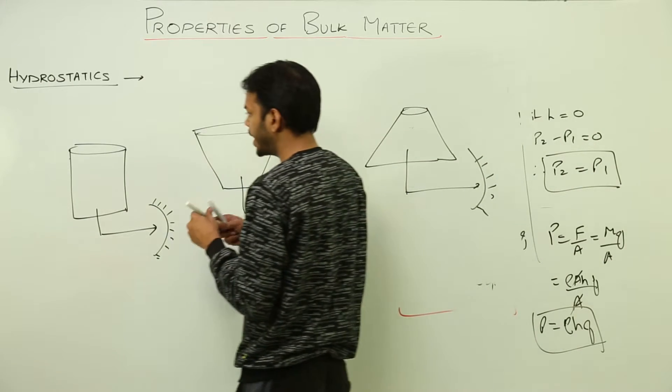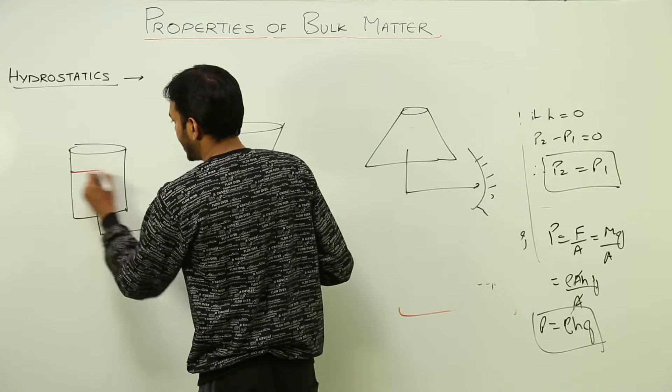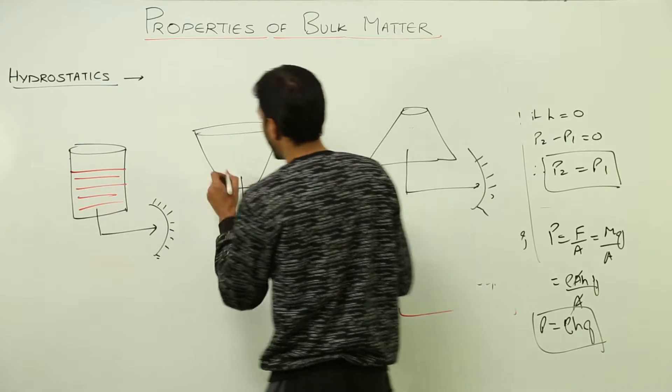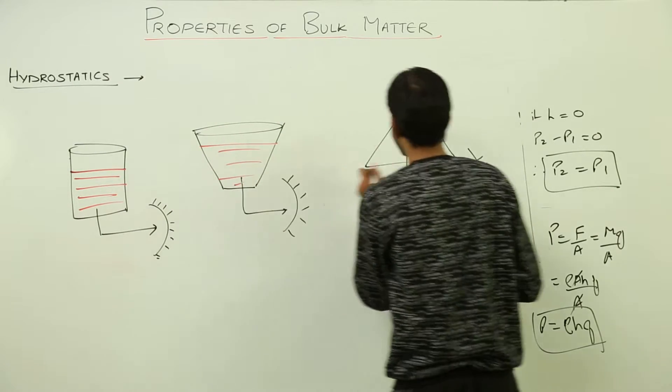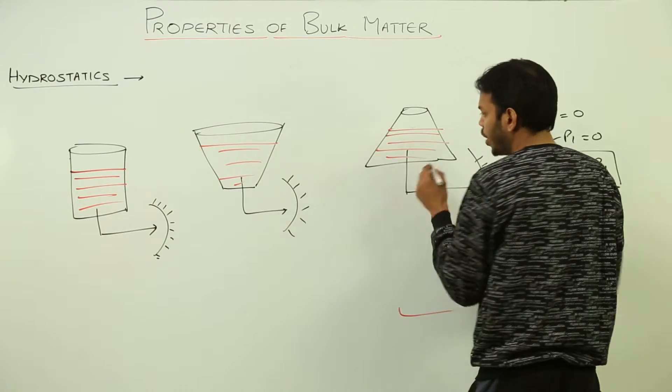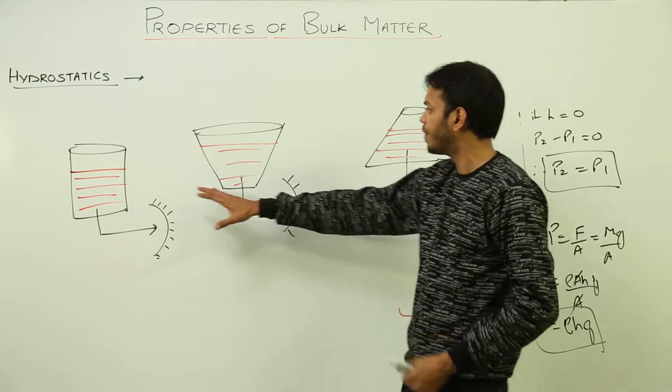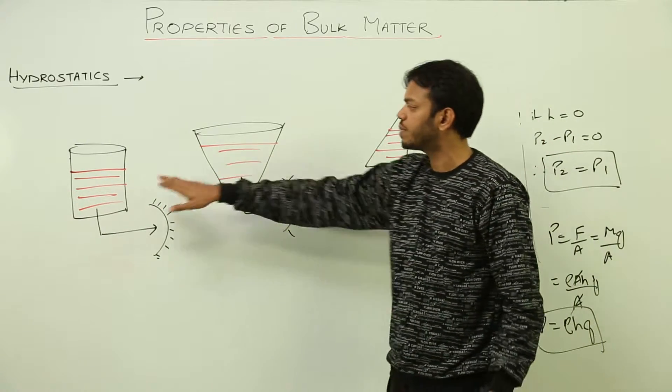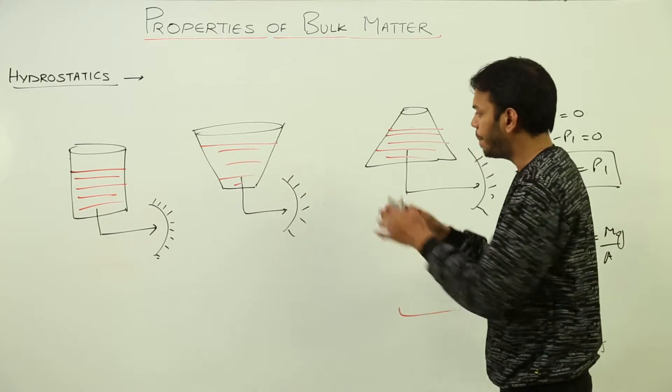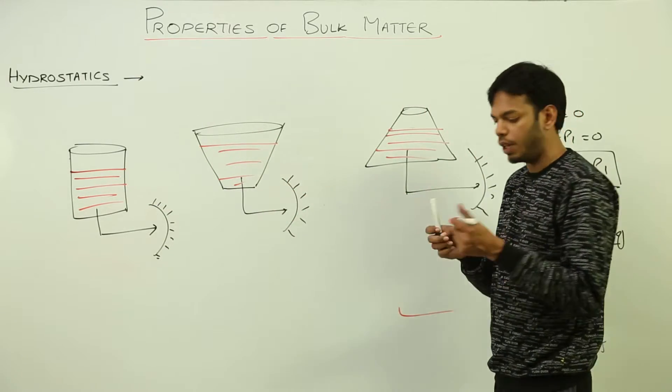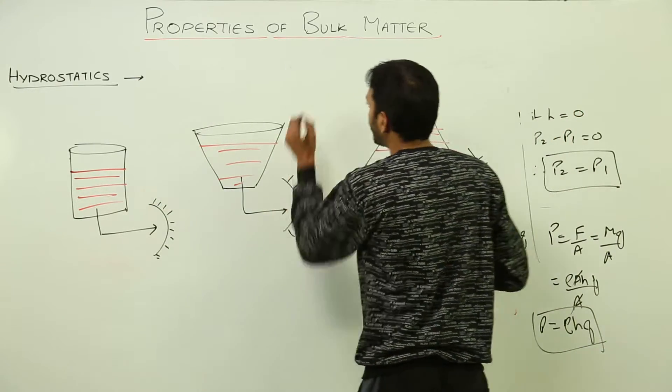So this is called hydrostatic paradox. If liquid is filled up to same height in all the three cases, you can already very well see that volume of liquid is maximum in these two cases whereas minimum in this, but still pressure in all the three cases would be equal because the only formula for pressure we have is rho h g.